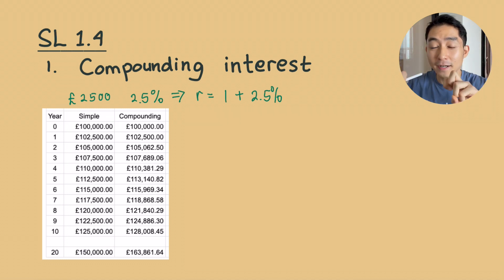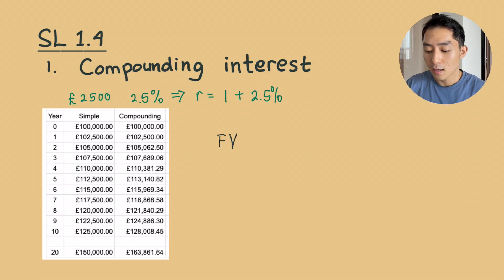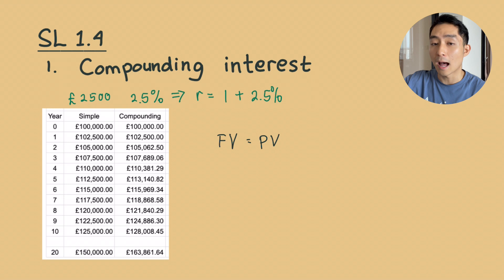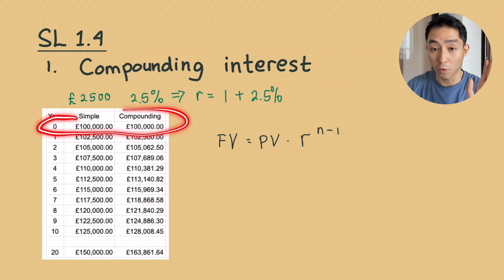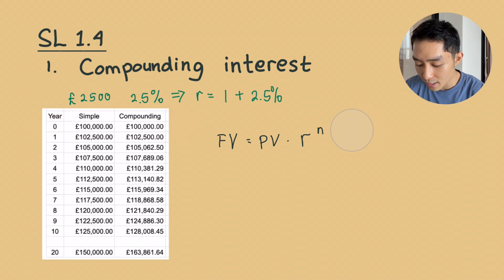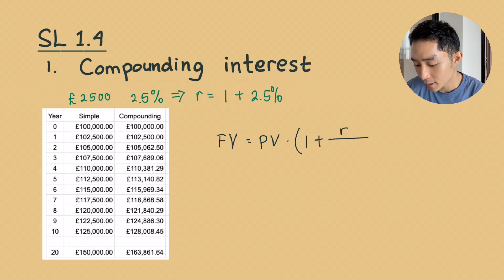Now let's convert our geometric sequence into the financial application formula in your formula book. The future term we're interested in is called the future value, and the starting point is called the present value. We need to multiply by the ratio raised to the power of n — since our initial is u₀, not u₁, the compounding power is n. The ratio is adjusted to be 100% plus the interest rate divided by 100, raised to the power of n.